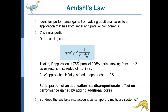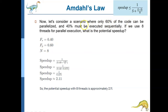Let's take one more example. Consider a scenario where only 60% of the code is parallelized and 40% has to be executed in a sequential way. If we use 8 threads or 8 cores, what is the potential speedup? The serial portion is 0.4, the parallel portion is 0.6, and the number of cores or parallel threads is 8. Substituting that into Amdahl's formula, we see that the speedup is just 2.88 rather than 8. This is what Amdahl's Law helps us determine — how much speedup we can expect given the serial and the parallel portion of the task.